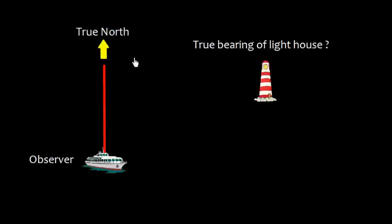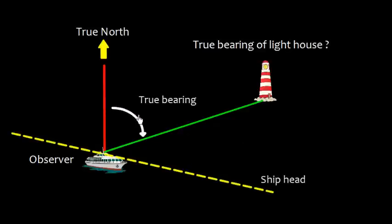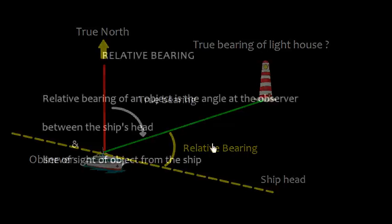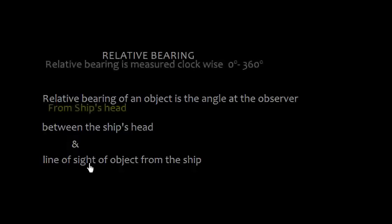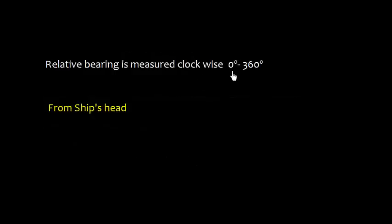The ship's head is in this direction, so we can see that this angle is a relative bearing. The relative bearing is defined as the angle at the observer between the ship's head and the line of sight of the object from the ship. Relative bearing is measured clockwise from 0 degrees to 360 degrees, and it is measured from the ship's head. The only difference from true bearing is that 000 degrees here is the ship's head, not true north.